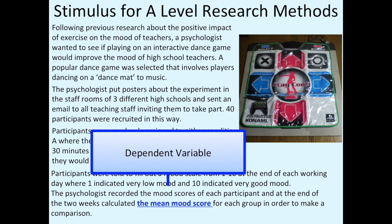Now that I know the independent variable, I'm looking for the dependent variable. I can see that the psychologist has measured it in a very simple way by the participants rating themselves on a mood score of 1 to 10. The psychologist has then calculated the mean mood score for each group, so the dependent variable is the mean mood score.